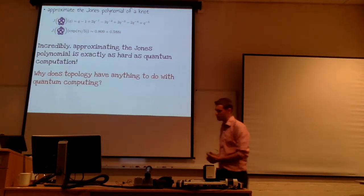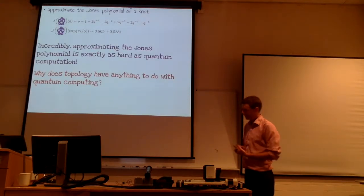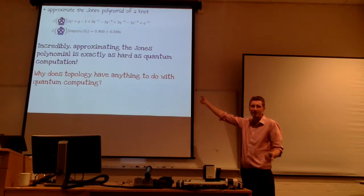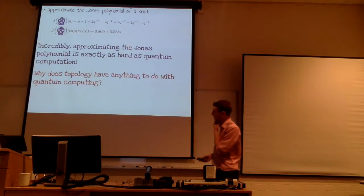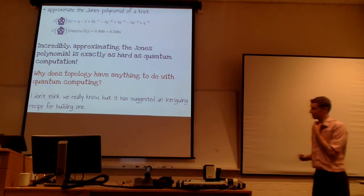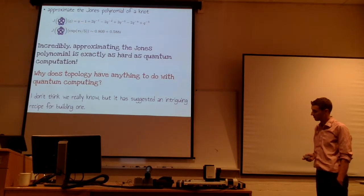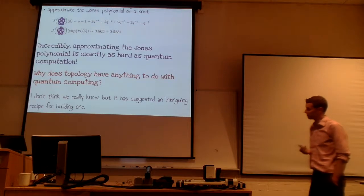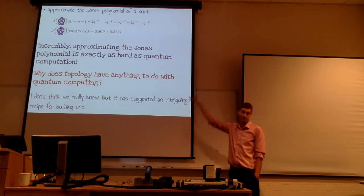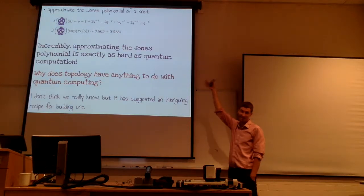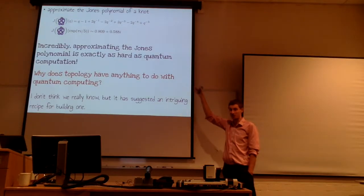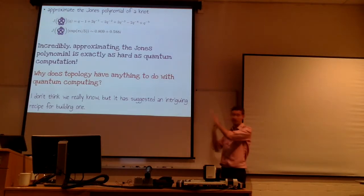This prompts the question: given that there's apparently this really deep connection between something in topology — the Jones polynomial of knots — and quantum computing, why do they have anything to do with each other? It's just bizarre that quantum computing has something to do with knots. I don't think anyone really has a satisfying answer to why this connection exists. But even though it's a bit of a mystery, this connection has suggested a really intriguing recipe for building a quantum computer based on physical devices which can apparently compute the Jones polynomial.